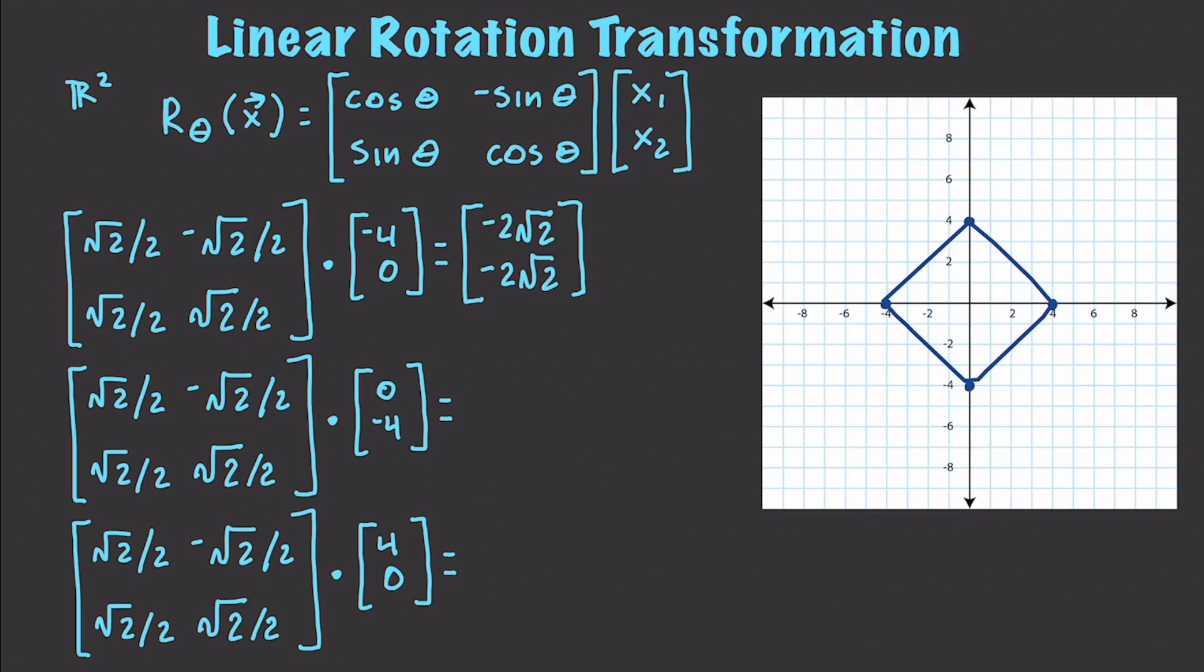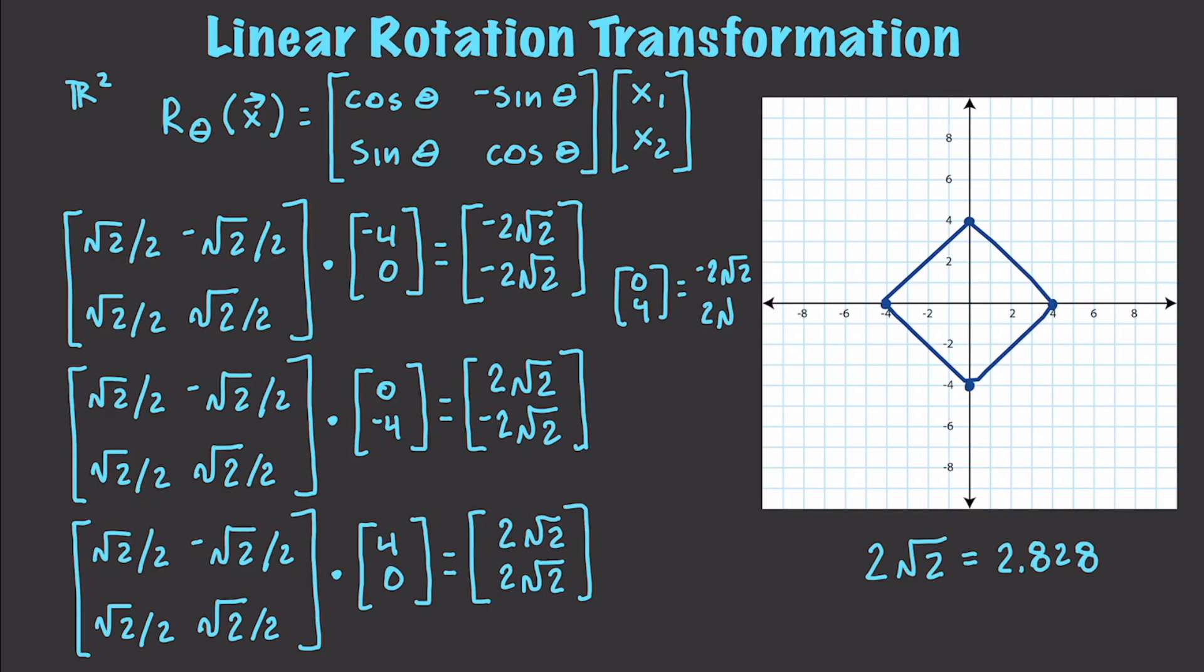...this is going to give us negative 2 square root of 2, negative 2 square root of 2 and 2 times the square root of 2 is going to be approximately equal to 2.828. This guy right here is going to be 2 square root of 2, negative 2 square root of 2 and this will be 2 square root of 2 and 2 square root of 2. For our vector that doesn't fit on the screen which is going to be 0 and 4 this is going to be negative 2 square root of 2 and 2 square root of 2.